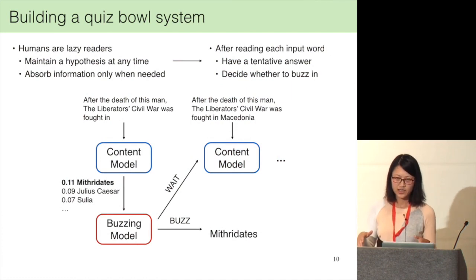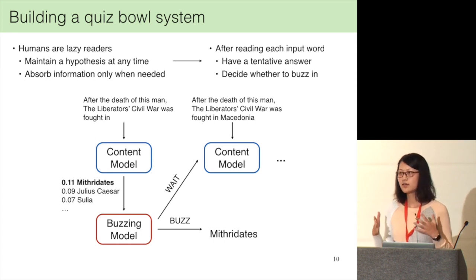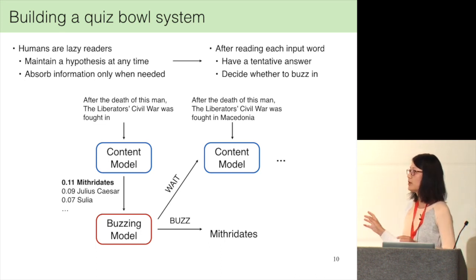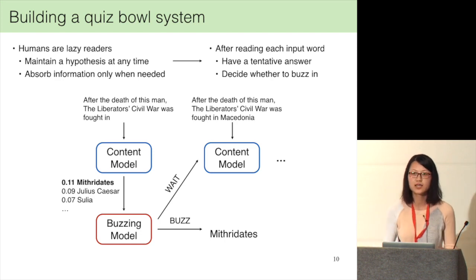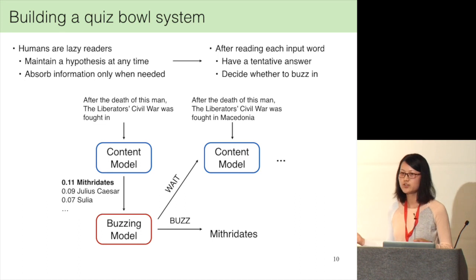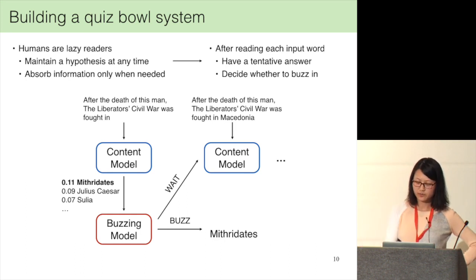How do we build a quiz bowl bot that can play with humans? We want our system to have a tentative answer after reading each input word, and the model should automatically decide when to buzz in. Our model consists of two modules: the content model, which is the question answering part — it takes a partial question and outputs a distribution over all possible answers — and the buzzing model, which is the decision-making part. It decides whether to wait for more information or to buzz and output the current highest-scoring prediction.